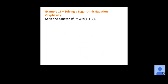Our first step would be to get the natural log by itself — divide by 2, giving x squared over 2 equals the natural log of x plus 2. Then rewrite in exponential form: e to the x squared over 2 equals x plus 2. Now I have an e with an x in the exponent, so I'd take the natural log of both sides — but that just takes us right back to where we started. We end up in a loop: trying to get x out of the e's exponent, then out of the natural log, back and forth.